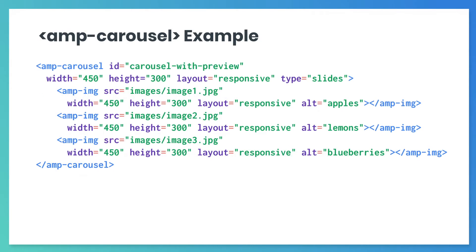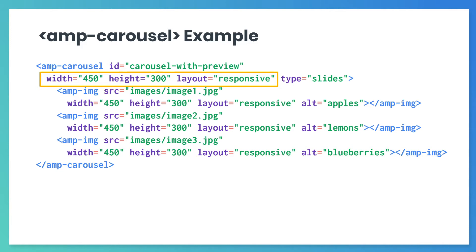Let's look at an example of AMP Carousel from the documentation. The carousel in this example contains three images for users to slide through. There are three categories of attributes associated with AMP Carousel. First, attributes that are common to all HTML elements, like ID — these probably won't get mentioned in the documentation as they're just part of HTML. Second, attributes that are common to all AMP components, for example width, height, and layout — these may not get mentioned either. And finally, attributes that are unique to the component in question, for example type — these are probably what you'll be looking for.